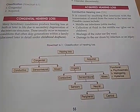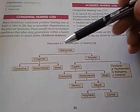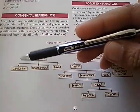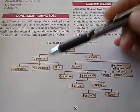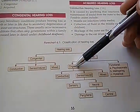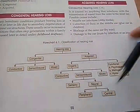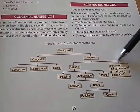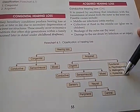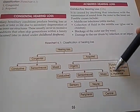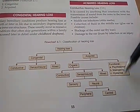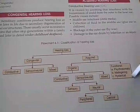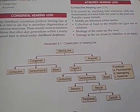Look at the classification of hearing loss. You have congenital and acquired. Under acquired, you have conductive, sensorineural, and mixed. Then you have organic and functional — functional being mostly psychosomatic, malingering, and hysterical.